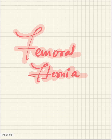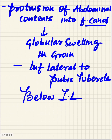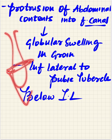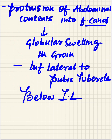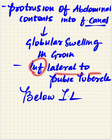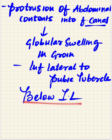The clinical aspect of the femoral sheath is the femoral hernia - a protrusion of abdominal contents into the femoral canal. A globular swelling is seen in the groin region, inferolateral to the pubic tubercle, below the inguinal ligament.